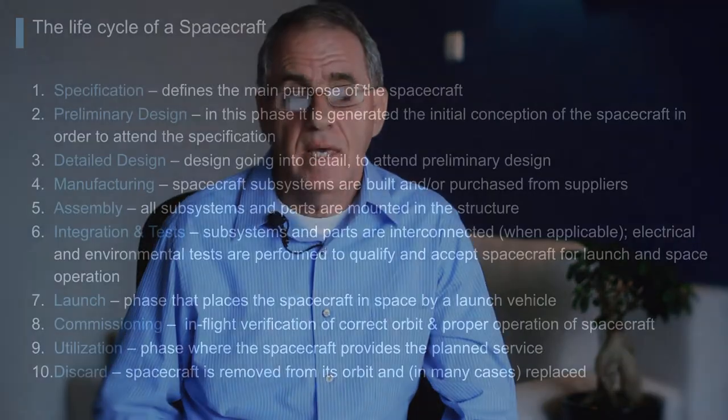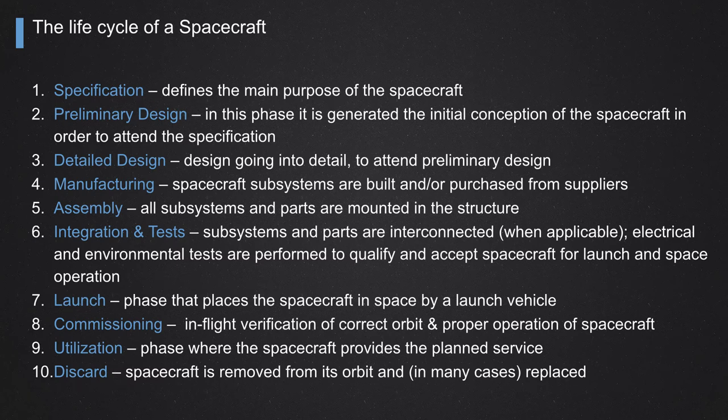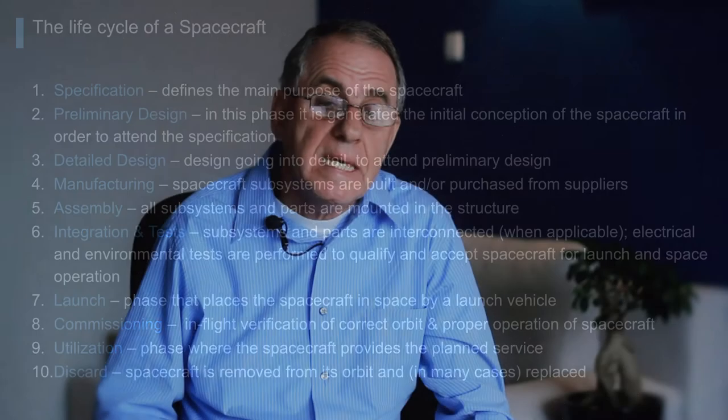Let's talk about the construction phases of a spacecraft - the different phases of the life cycle. The first phase is called specification. In the specification phase, people sit at the table and define the main purpose of the spacecraft: what is the spacecraft going to do in space, and why do we need that particular spacecraft. That's a very basic but fundamental part of the beginning of spacecraft design.